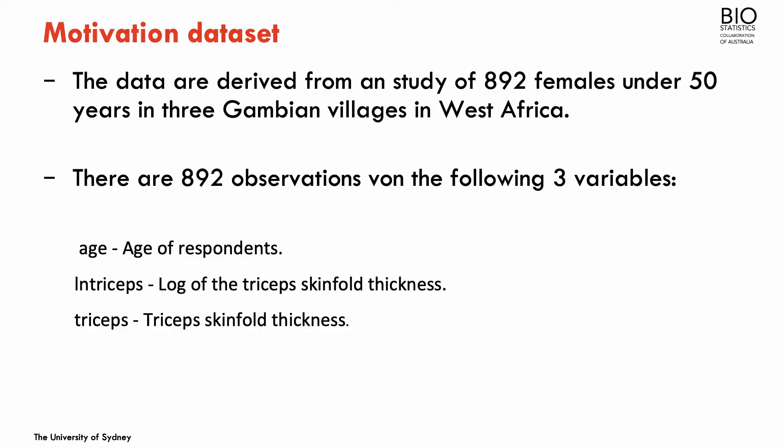I'm going to use as an example this dataset with about 900 observations with measurements of the triceps, so triceps skinfold is a measure of body fatness. And I want to explore the relation between age of the participants and this triceps measurement.